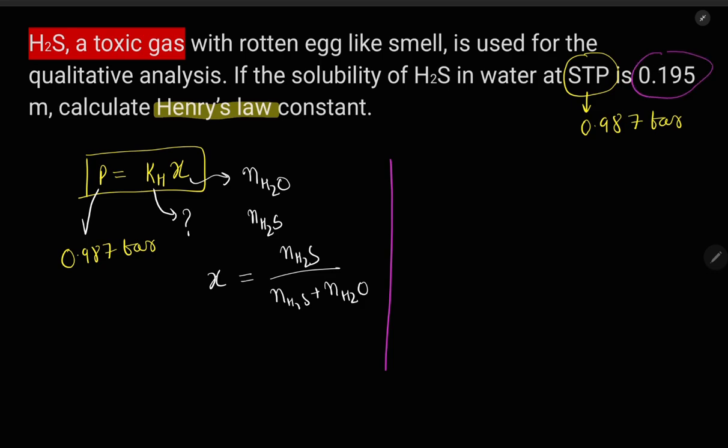The solubility is 0.195 mole per kg. That means in one kg water, the number of moles of H2S is 0.195. So we already have the number of moles of H2S, which is 0.195.